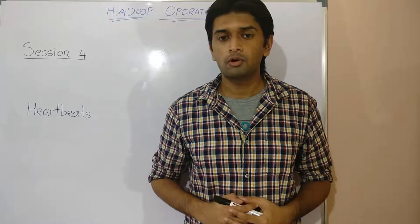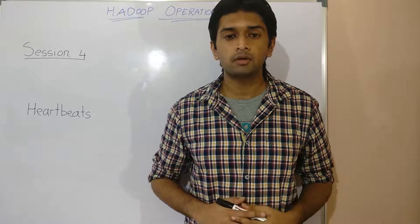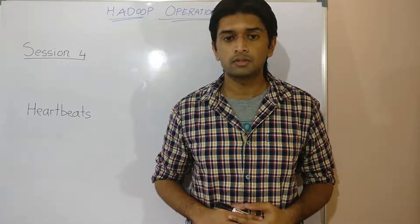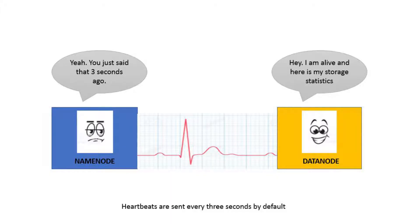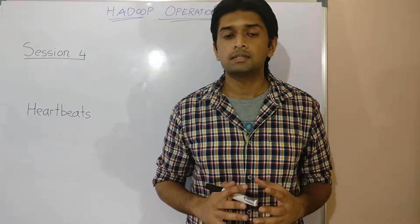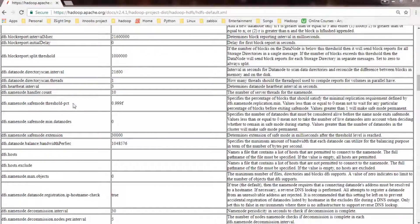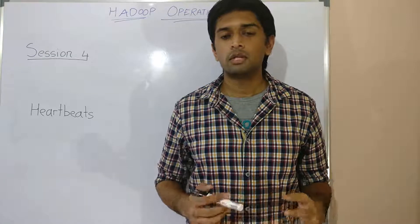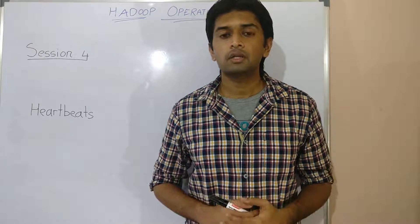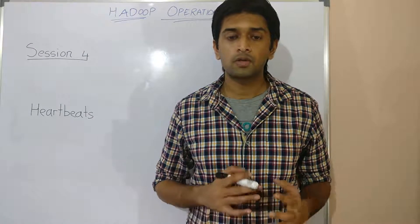Apart from block reports, all data nodes send periodic heartbeats to the name node to notify that they are alive and operational. The heartbeats also carry information about total storage capacity, used space, and available space statistics for that particular node. The default heartbeat interval is 3 seconds, configurable using the heartbeat dot interval parameter. The name node also performs a periodic review of its block address table to find any under- or over-replicated blocks and fix them.